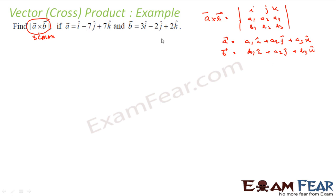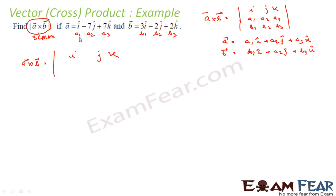Now comparing these two equations, I can identify A1, A2, A3 and B1, B2, B3. So A cross B will be the determinant with I, J, K in row one; 1, -7, 7 in row two; and 3, -2, N in row three.